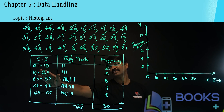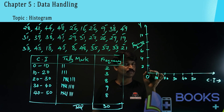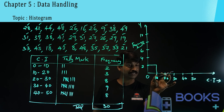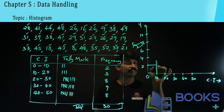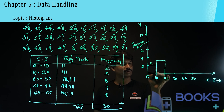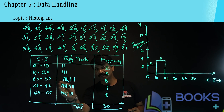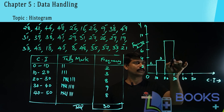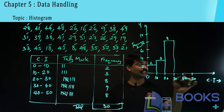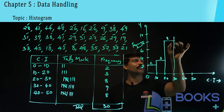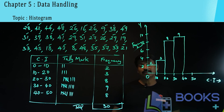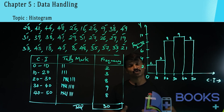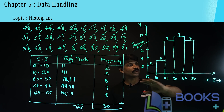In the first class interval 0 to 10, the frequency is 2, so draw a bar up to 2. For 10 to 20, frequency is 3, so the bar reaches between 2 and 4. For 20 to 30, frequency is 8. For 30 to 40, frequency is 9. For 40 to 50, frequency is 8. When you draw a histogram, there is no gap between the bars — that is how you draw a histogram.